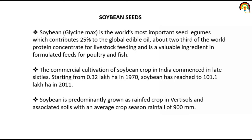Soya bean seed is the world's most important seed legume, which contributes 25% of the global edible oil. Soya bean also contributes about two-thirds of world protein concentrate for livestock feeding, and is a valuable ingredient in formulated feed for fish. The commercial cultivation of soya bean crop in India commenced in the late 1960s, starting from 0.32 lakh hectares, and by 1970 soya bean area reached 101 lakh hectares. Soya bean is predominantly grown as a rain-fed crop, with an average crop season rainfall requirement of 900 mm.